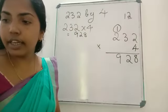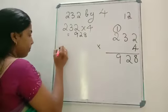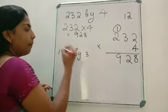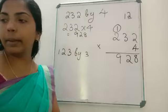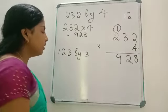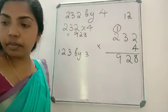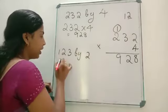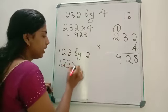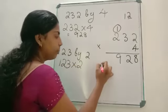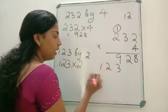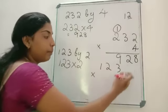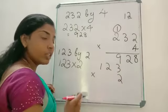Did you understand? Let us do one more question. Multiply 123 by 2. So first we have to rewrite the question: 123 into 2. Now let us do the multiplication. 123 into 2 — the 2 has to be written in the place just below the number in the 1's place.